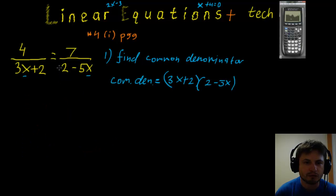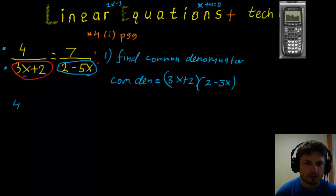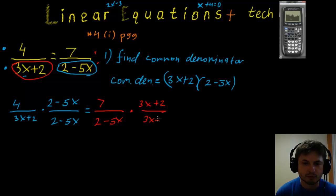Now we apply the same idea to our equation with x's. We take the denominator from one side and multiply both numerator and denominator on the other side by it. So we get: 4 over (3x+2), multiplied by (2−5x)/(2−5x), equals 7 over (2−5x), multiplied by (3x+2)/(3x+2). We're essentially multiplying by 1, which is always valid.